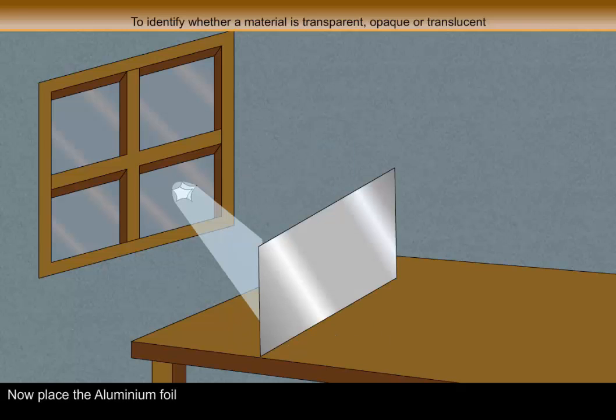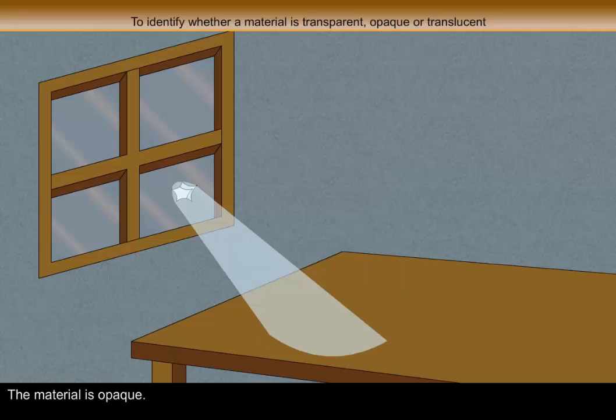Now place the aluminum foil. No, light does not pass through it. So the material is opaque.